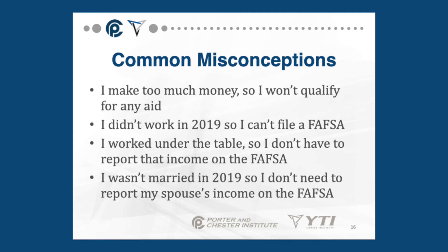Another misconception is that some people think that because they worked under the table, they don't have to report that income on the FAFSA. On the contrary, all earned income has to be reported on the FAFSA, and your school may ask you for more information about it if needed. One final misconception is that people may think that although they were married as of the day they filed the FAFSA, because they weren't married back in the 2019 tax year which the FAFSA is looking at, they don't need to report their spouse's income. In fact, the income from both parties must be included on the FAFSA.